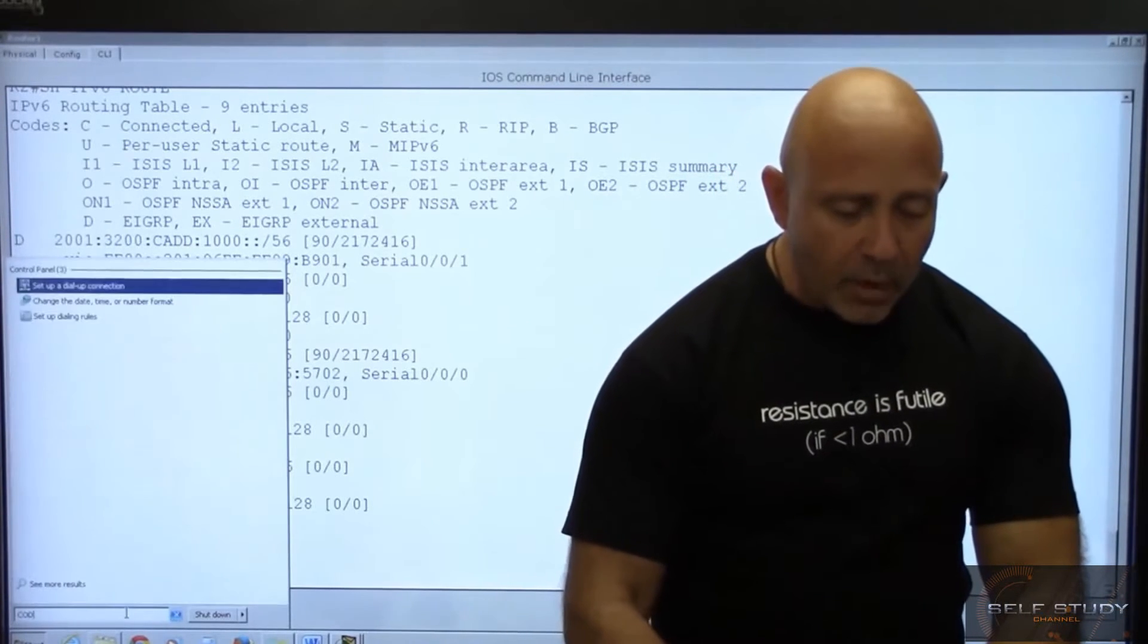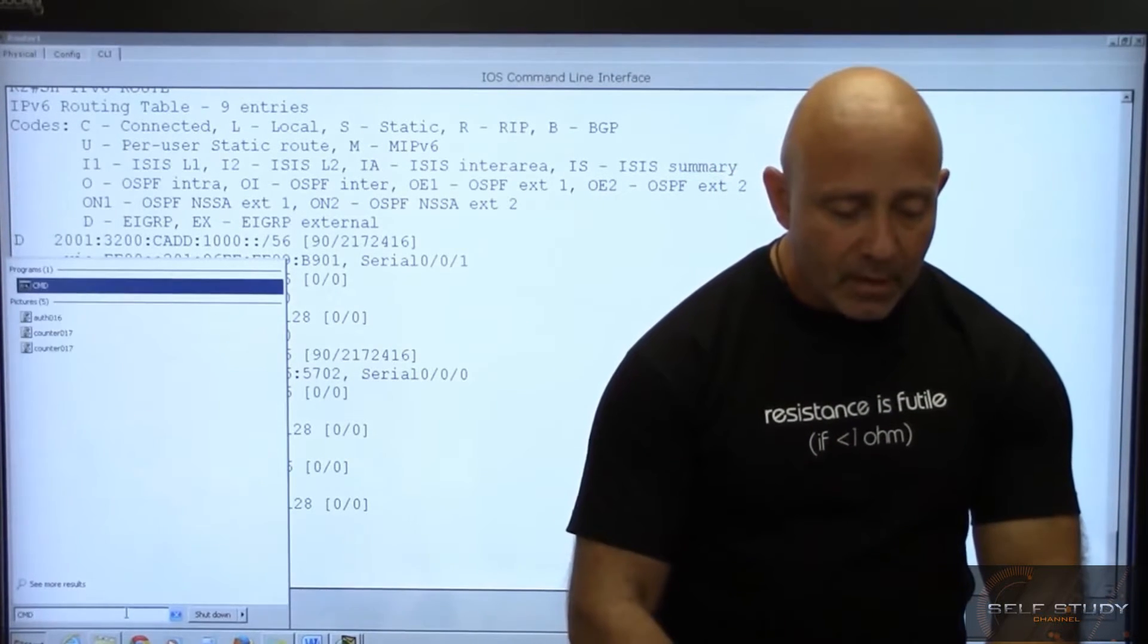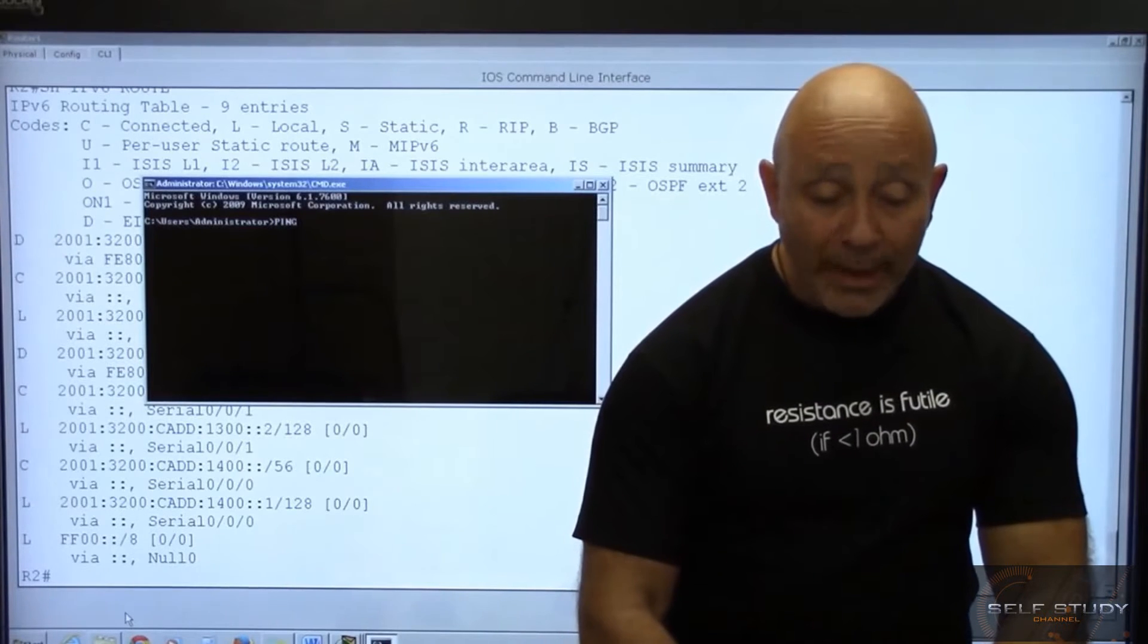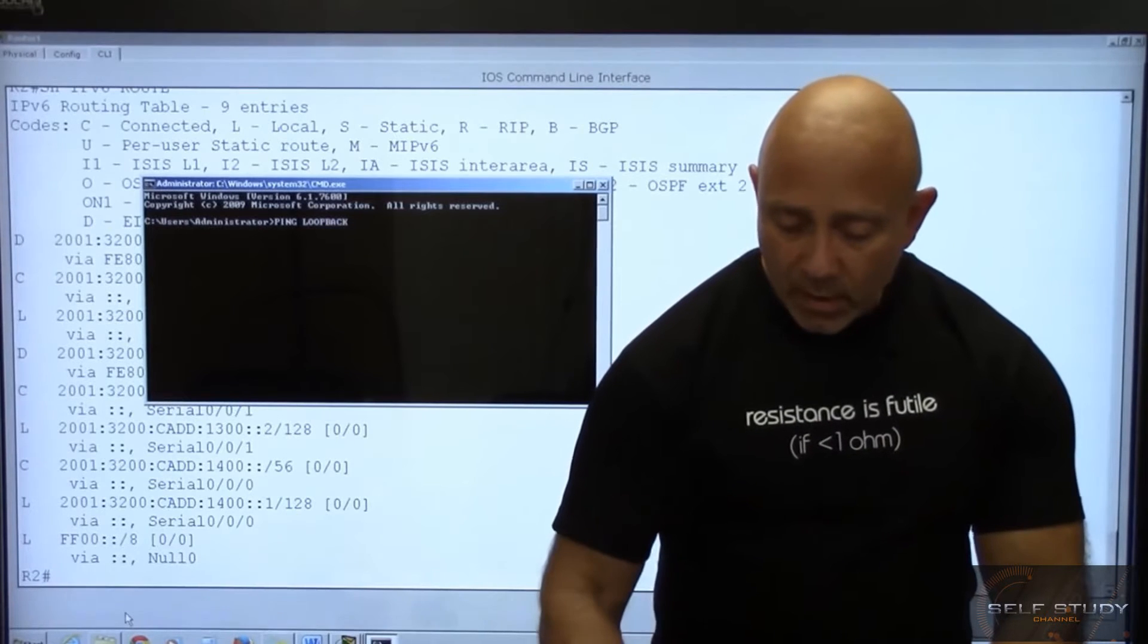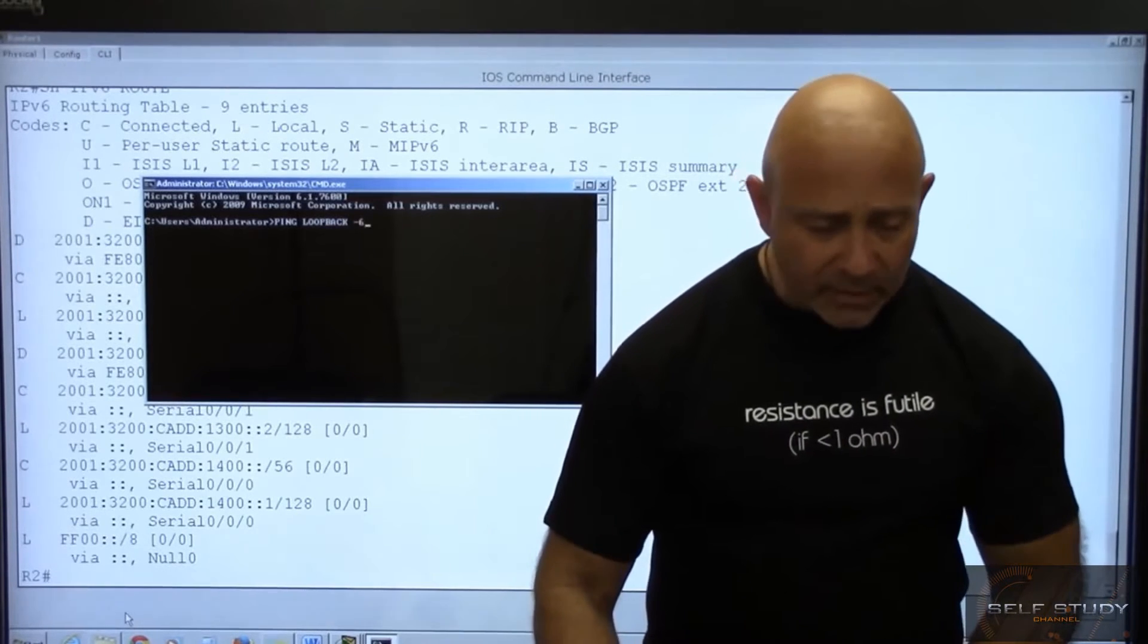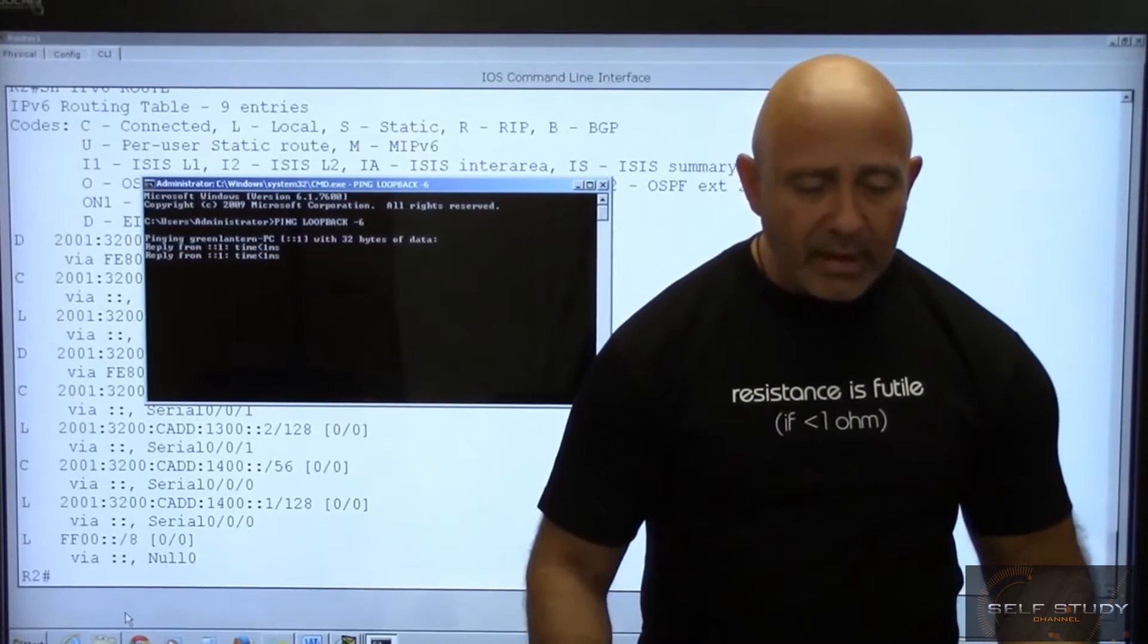I'm going to ping just a loopback right. I can ping, let's say loopback, and I'll put a switch, minus 6 I believe that's the switch for it, and it gives me the IP version 6.